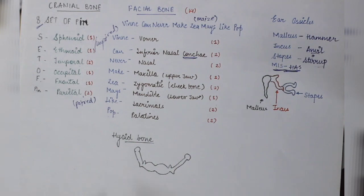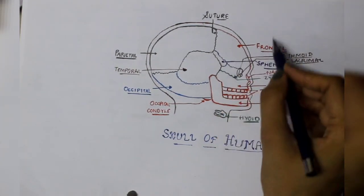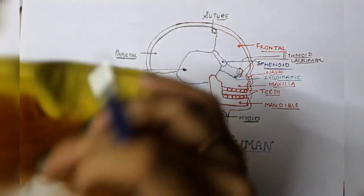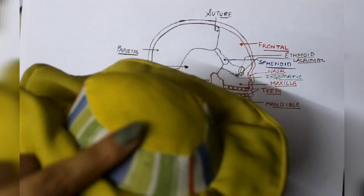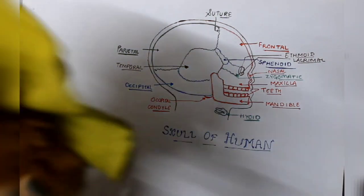And last bone, there is hyoid bone which I have told below the tongue. So this is a mnemonic which you can remember for the skull bones. If we can see it in the diagram.